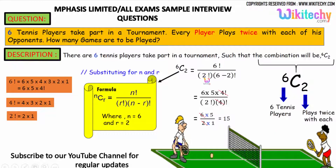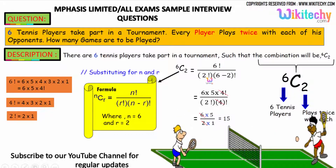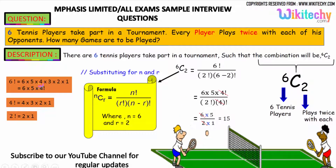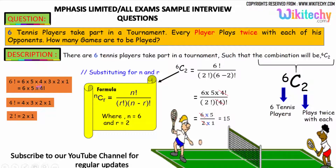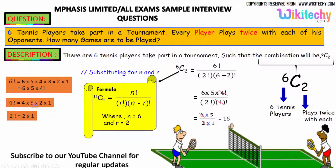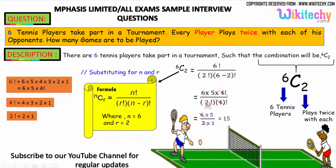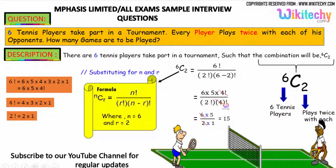So, 6 factorial divided by 2 factorial into 6 minus 2 factorial. 6 factorial is denoted as 6 into 5 into 4 into 3 into 2 into 1, or 6 into 5 into 4 factorial. 4 factorial is 4 into 3 into 2 into 1. So we got 6 into 5 into 4 factorial divided by 2 factorial into 4 factorial.